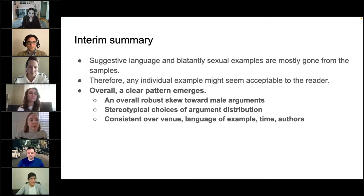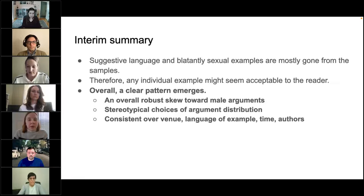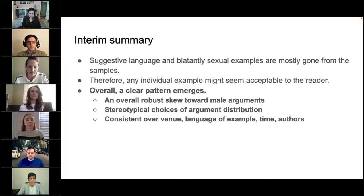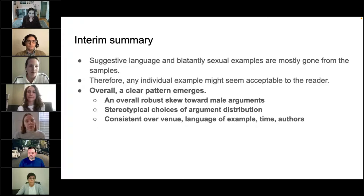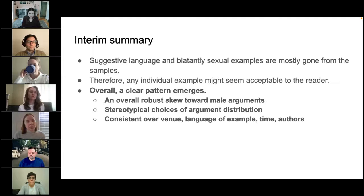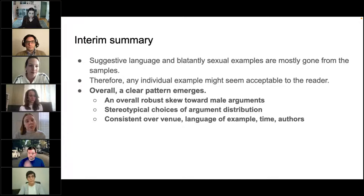That concludes the summary of our results. To sum up: suggestive language and blatantly sexual examples are mostly gone from these samples, so any individual example you pick out today might seem perfectly acceptable. But when we look in the aggregate, a clear pattern emerges — an overall robust skew toward male arguments over female arguments, as well as the persistence of stereotypical choices. This is consistent over venue, over the language of the example, over time, and across many different authors. There is clearly a systemic issue persisting despite the more egregious examples being mostly gone.